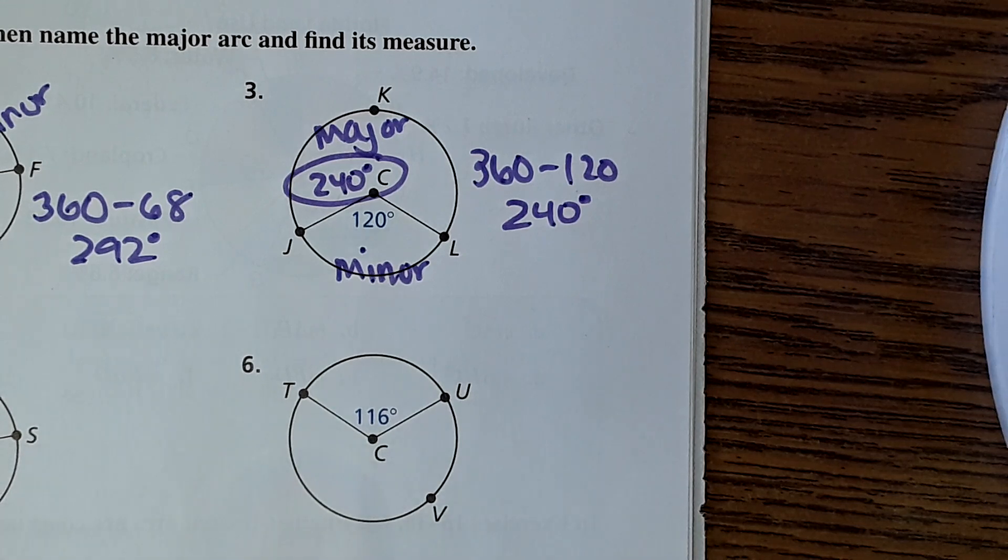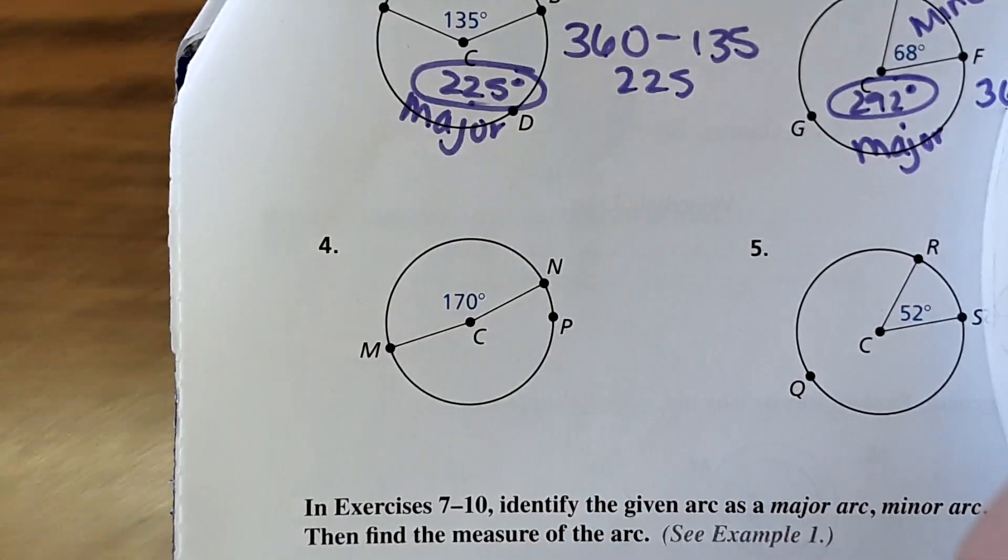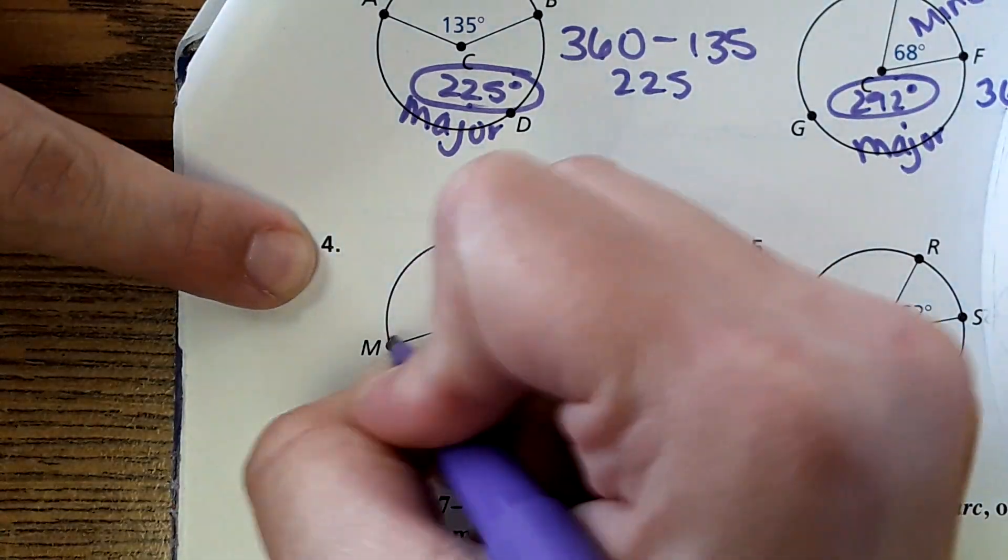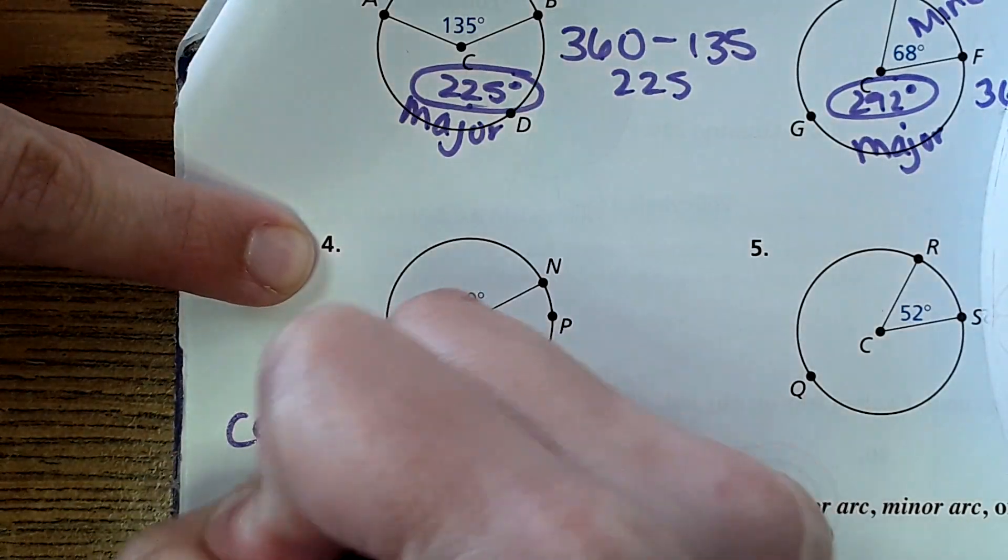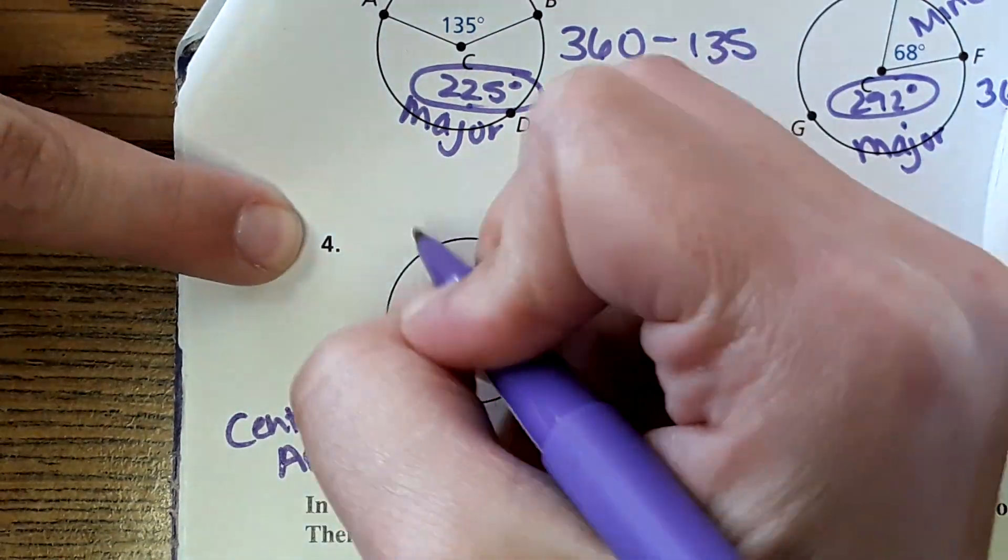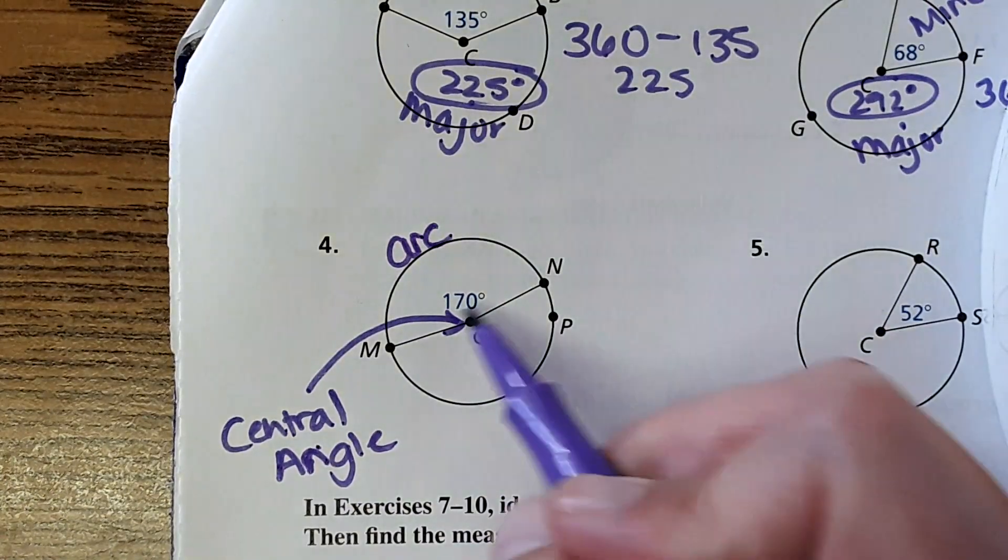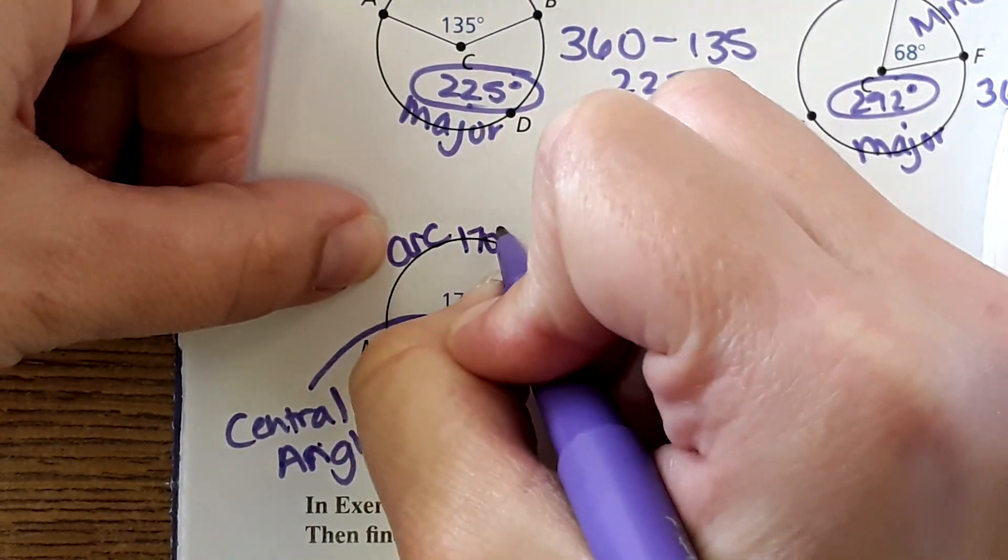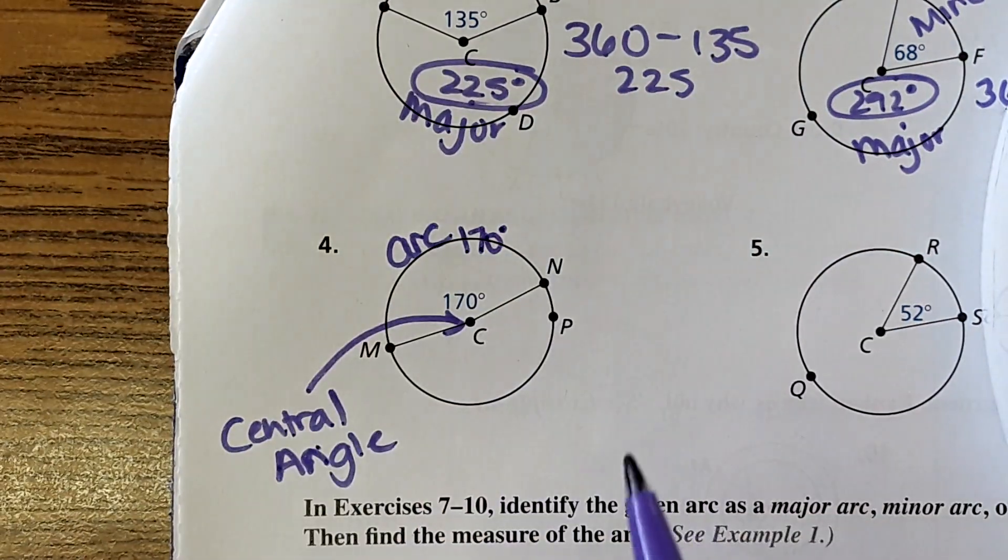The next three is literally repeating that, but something I do want to go over, a concept that's important: this angle right here is called a central angle, and this is called the arc. The degree measure of the central angle and the degree measure of the arc is the same. So if this is 170 degrees, then arc MN is also 170 degrees.